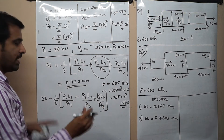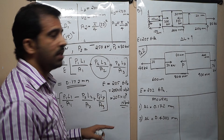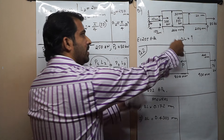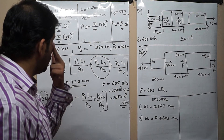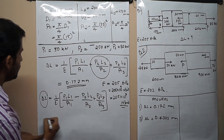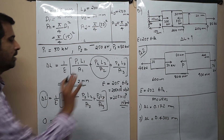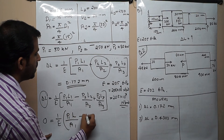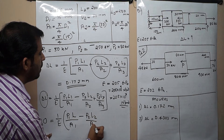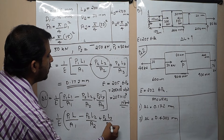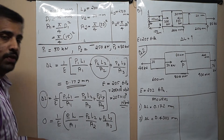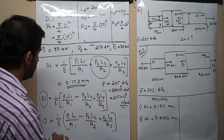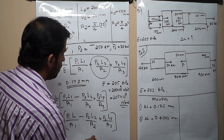There may be a sub-part to this question asking: if the net deflection is zero, what will be the length of the first section? We can change the equation accordingly: 0 equals (1/E) times [P1·L/A1 minus P2·L2/A2 plus P3·L3/A3]. Solving for L gives the required length of segment AB. This is how you solve this problem.